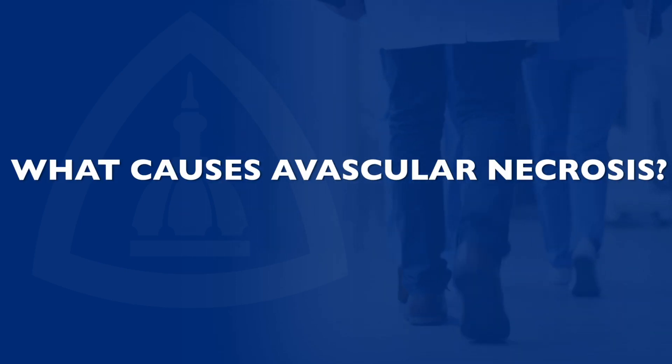Avascular necrosis is loss of blood supply leading to death of bone tissue. It commonly affects the hips, even though there are other joints in the body that are also affected. Any condition that causes blockade of blood supply to any part of the bone can cause avascular necrosis. In the hip example, there are small blood vessels that supply the head of the hip. The hip joint is made of a socket and a ball, and when the blood supply to the ball is blocked, we have avascular necrosis of the hip.